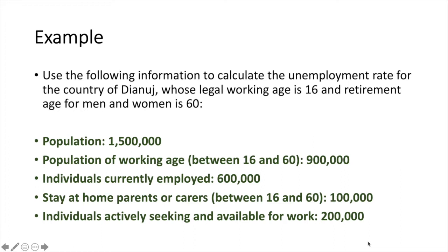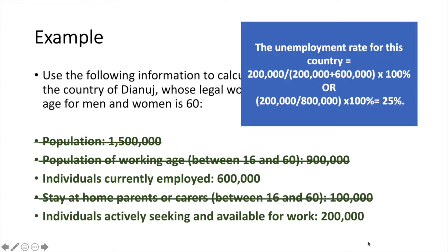I'll give you a second before I share the answer — if you want to work it out, pause the video here. The unemployment rate equals 200,000 (individuals actively seeking and available for work) divided by the labour force of 200,000 plus 600,000. So this is 200,000 divided by 800,000 times 100%, which gives us 25%.